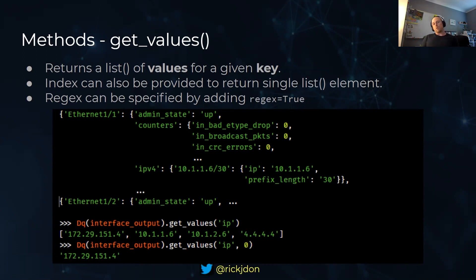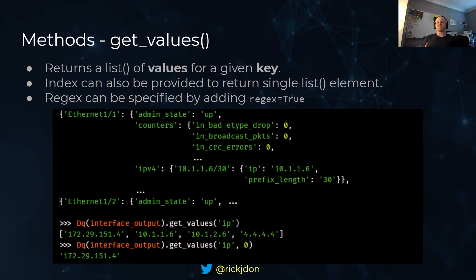The response to get_values is a list. You might not always want to get a list back - you might just want one value back as a string. You can actually give it the index element of that list to just get that one item back, for example the first element.